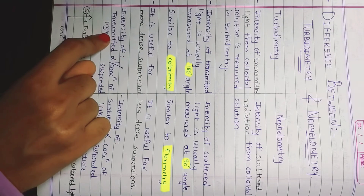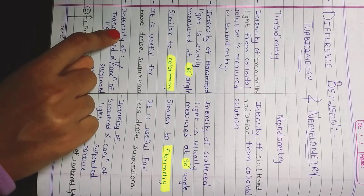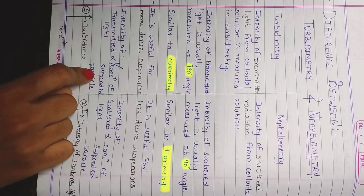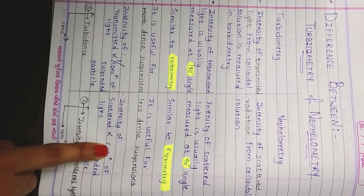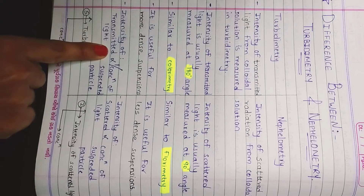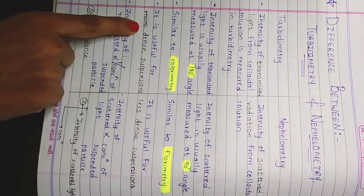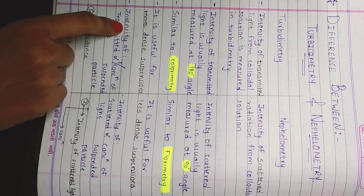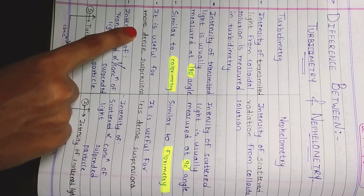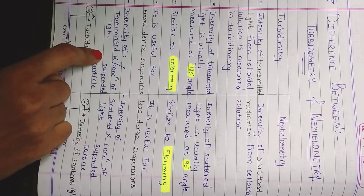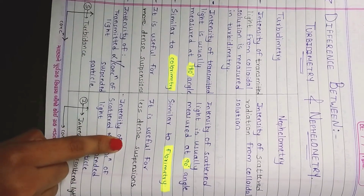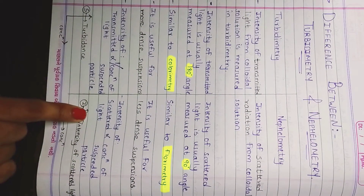Next, the intensity of the transmitted light is indirectly proportional to the concentration of the suspended particles, whereas the intensity of the scattered light is directly proportional to the concentration of the suspended particles. This makes sense because the more dense the solution, the less light will be transmitted through it, and vice versa for less dense suspensions. Nephelometry is based on the principle of scattering.